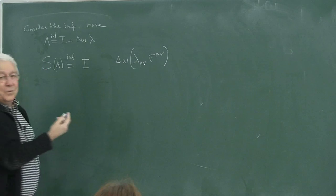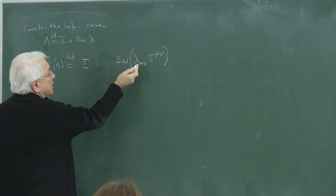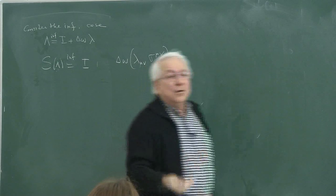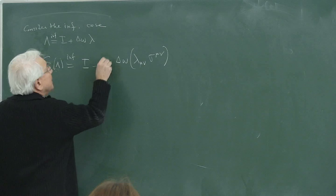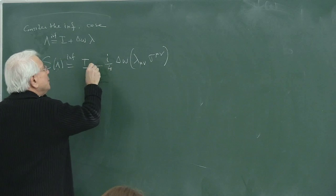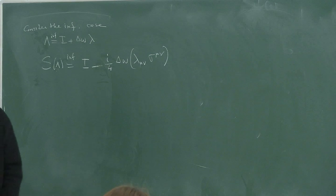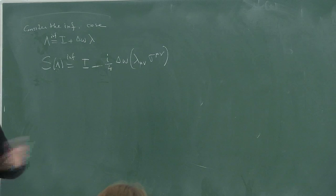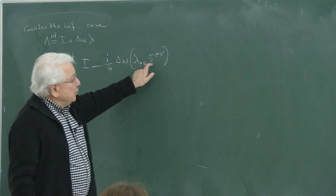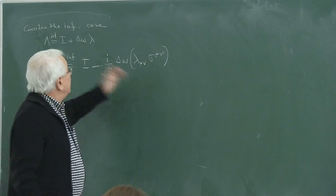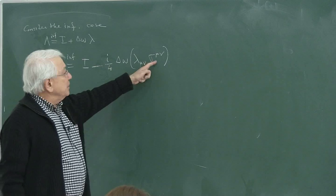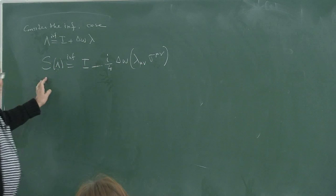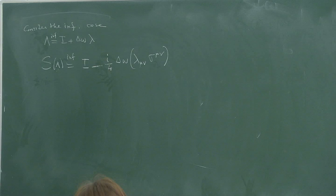In order for everything to come out cleanly in the direction of expectations, we introduce a factor of minus i over 4. That's the definition — we take it to be minus. There is nothing against writing plus, but this choice makes everything work out. So I define the infinitesimal S as such.